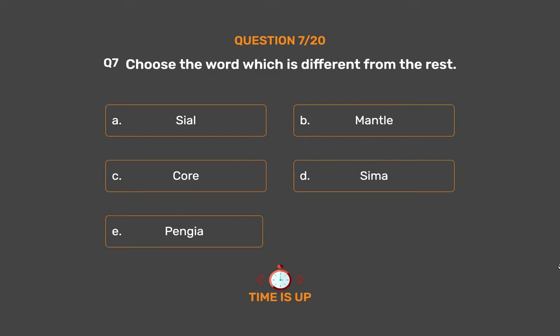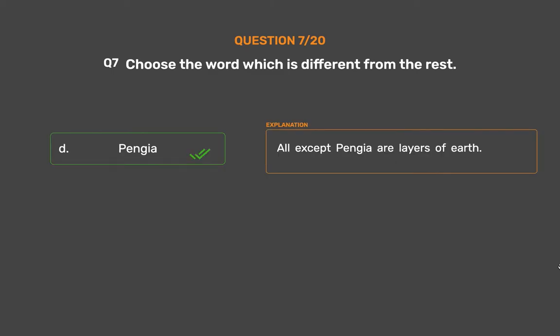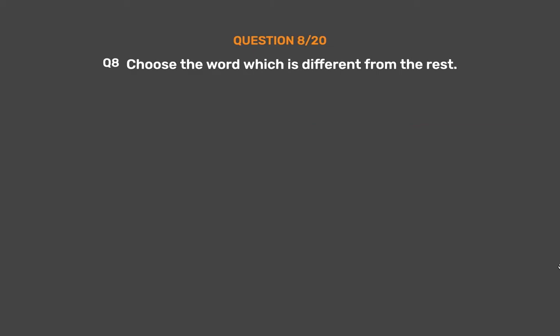The correct answer is Option E: Pengia. All except Pengia are layers of the earth.